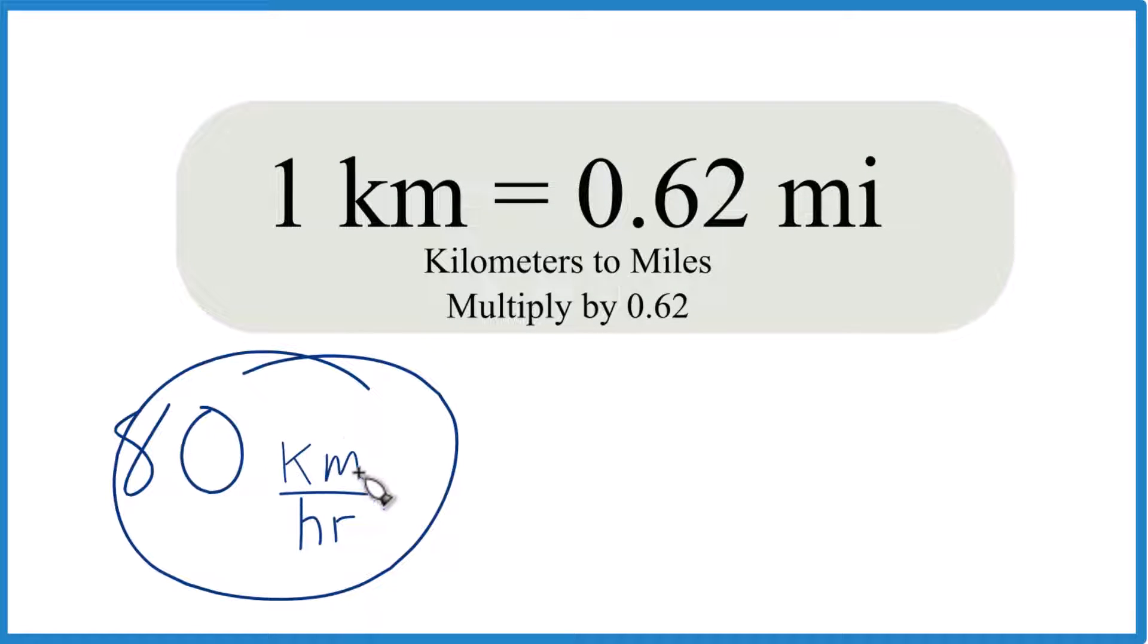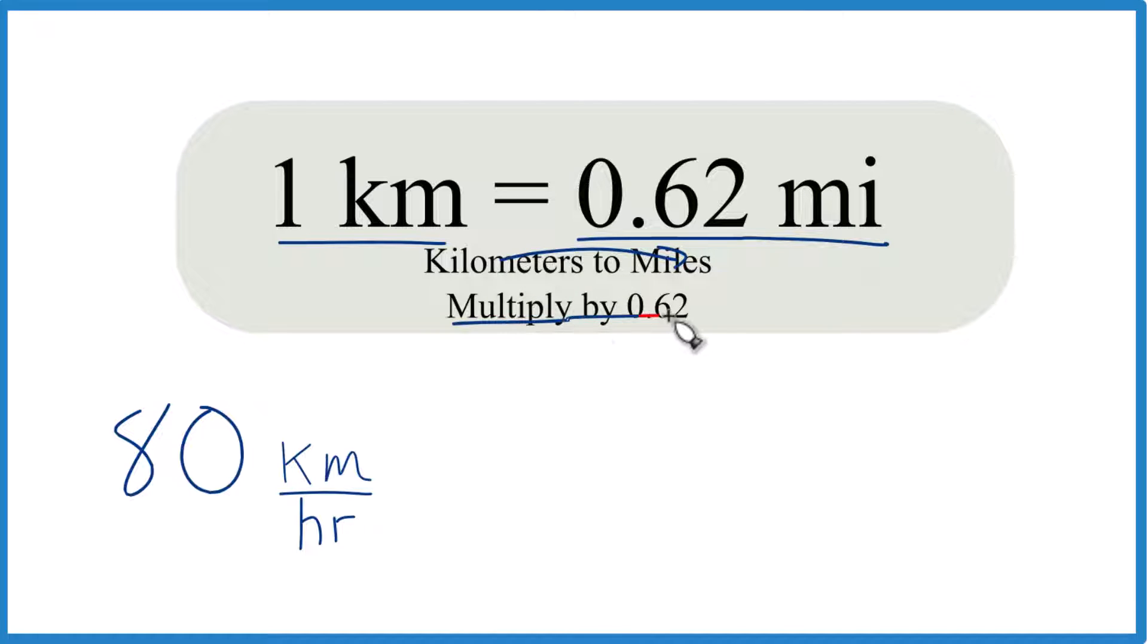If you have 80 kilometers per hour and you want to get that to miles per hour, here's how you do it. One kilometer is 0.62 miles. Really, all we need to do to go from kilometers to miles is multiply by 0.62.